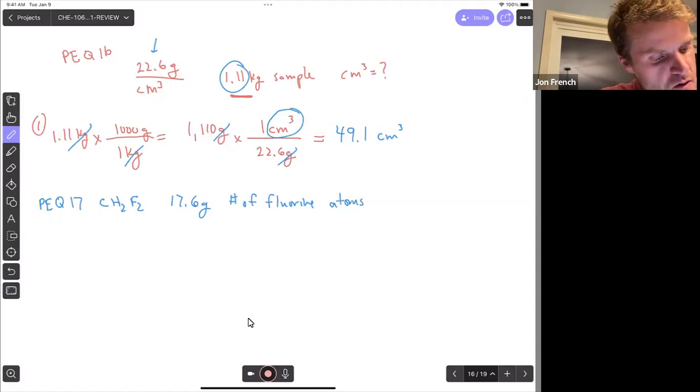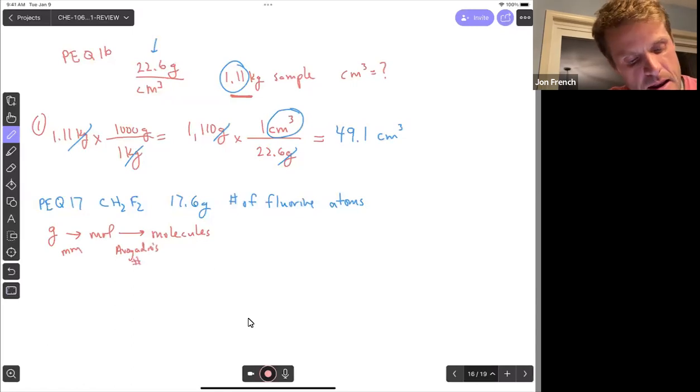So to kind of map it out, we can go from grams to moles, moles to molecules. So grams to moles, we're going to use the molar mass, moles to molecules, Avogadro's number. And then now we're going to go to molecules to atoms of fluorine. And for that, we're going to use the molecular formula because the molecular formula, there are two fluorines for each one molecule. So that's the last step that we'd have to do.